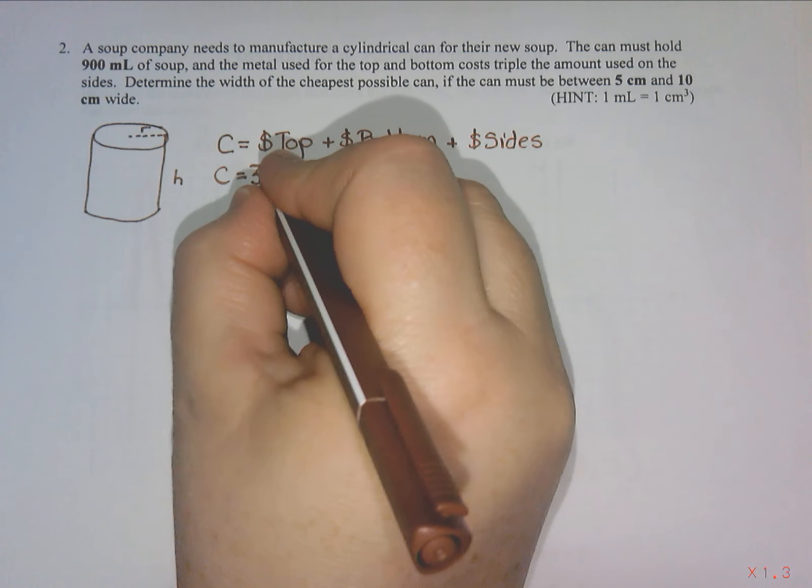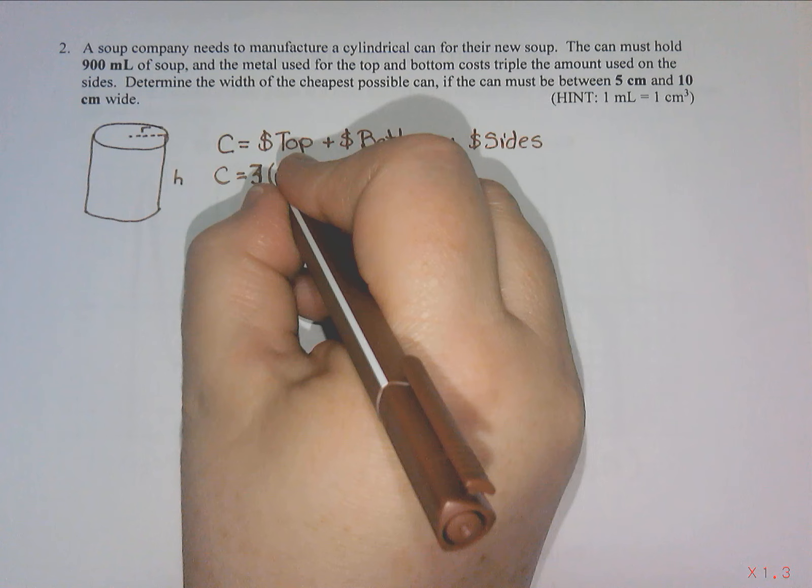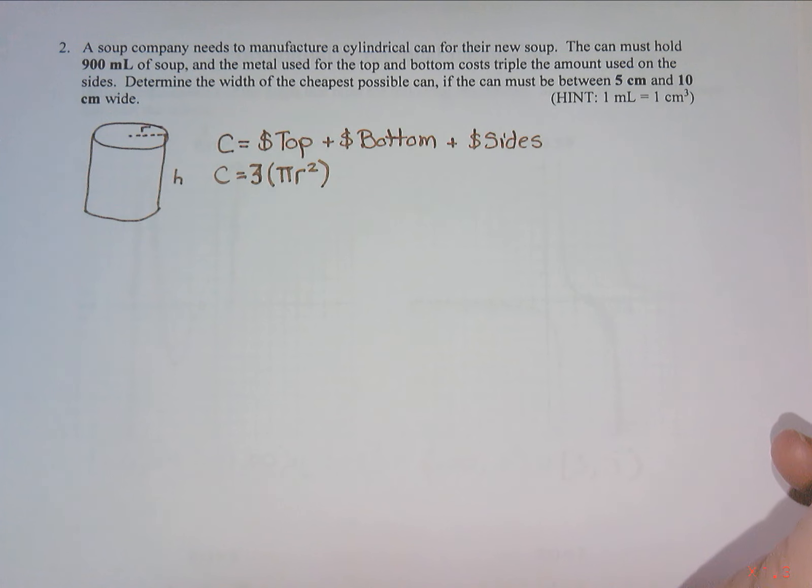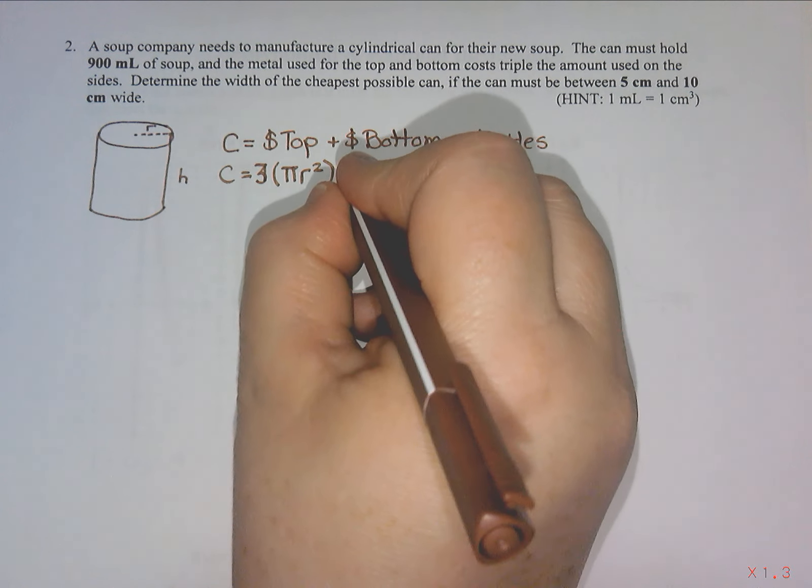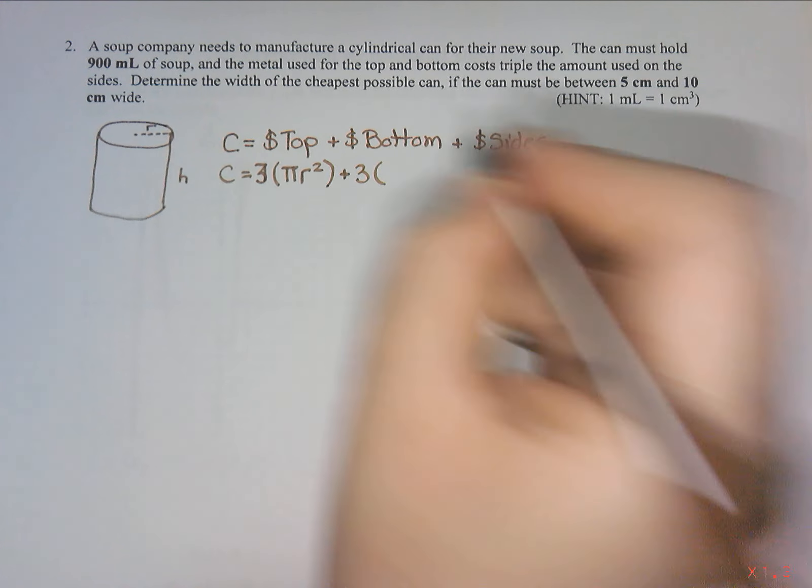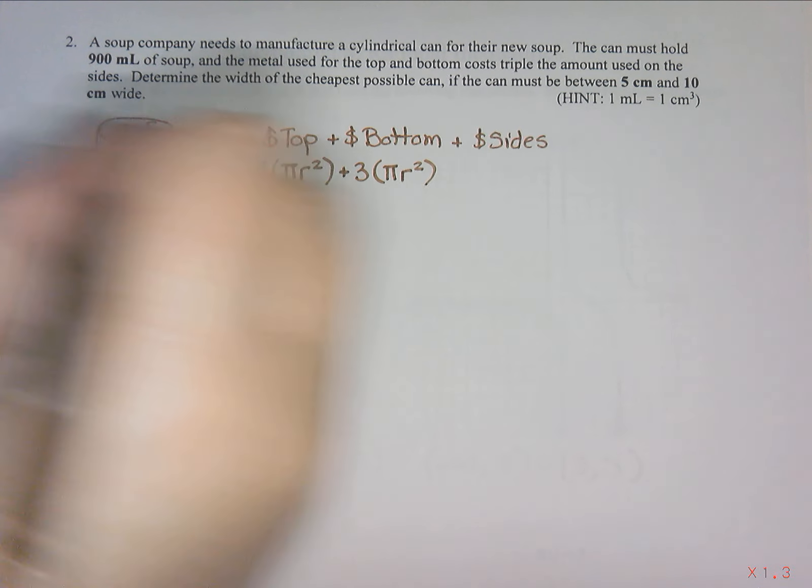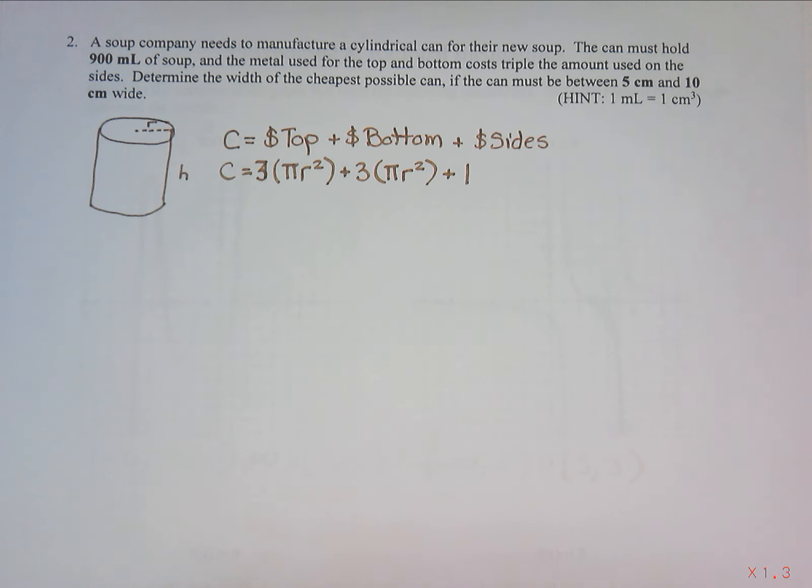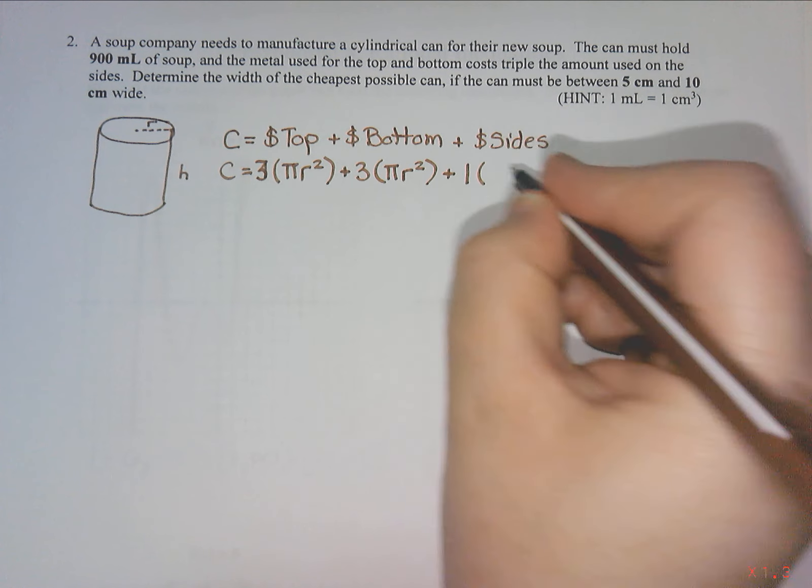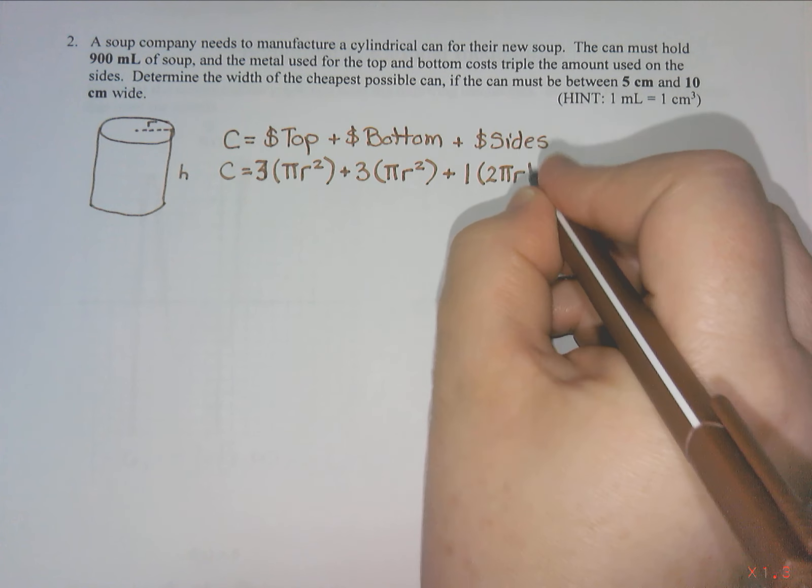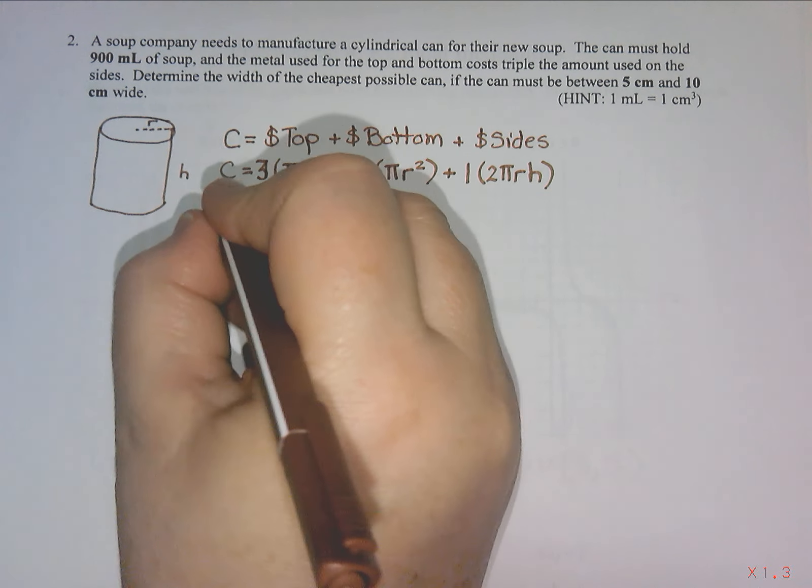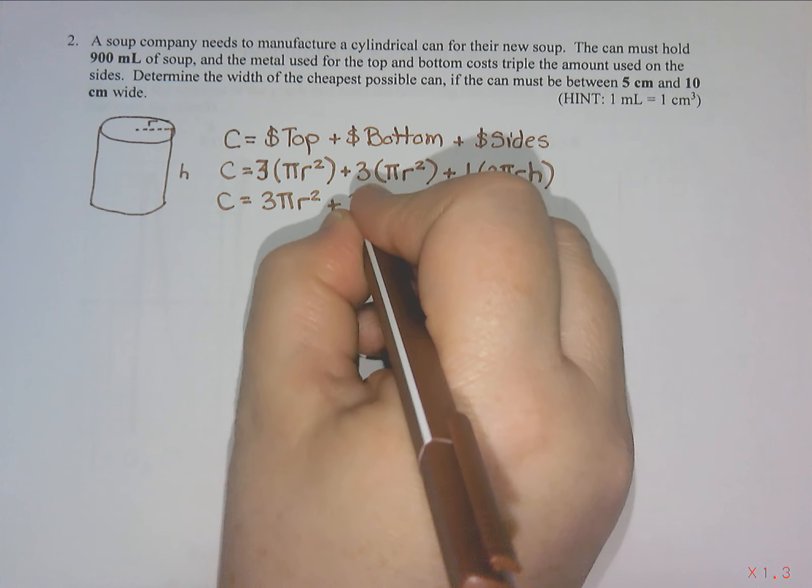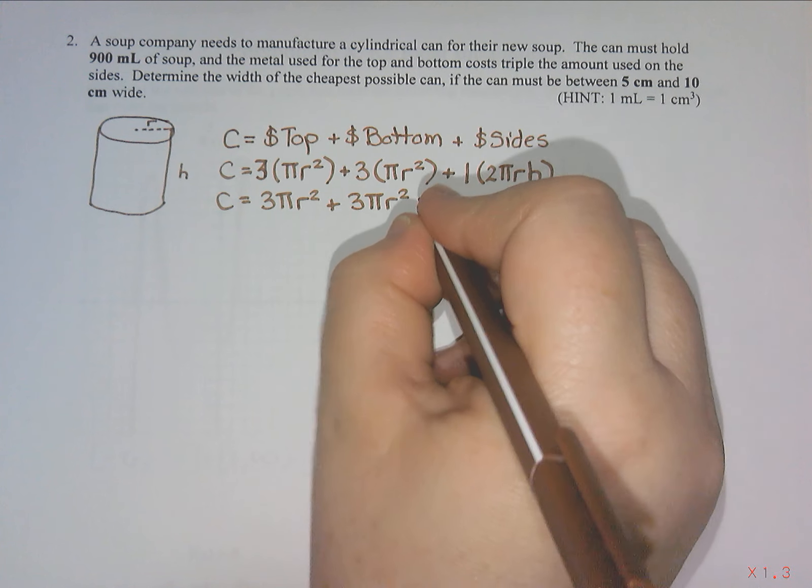I'm going to let the cost of the top and bottom be 3, and the cost of the sides be 1. So this is going to be 3 times the area of the top, which is pi r squared. The cost of the bottom is also 3 times pi r squared. Then our side part is only 1, and that is 2 pi r h.